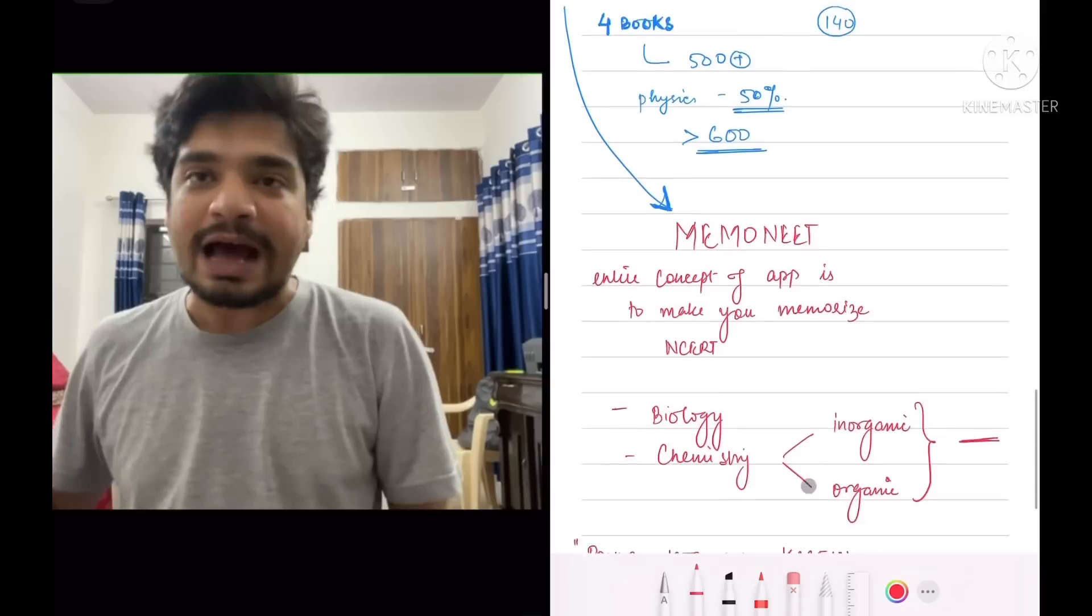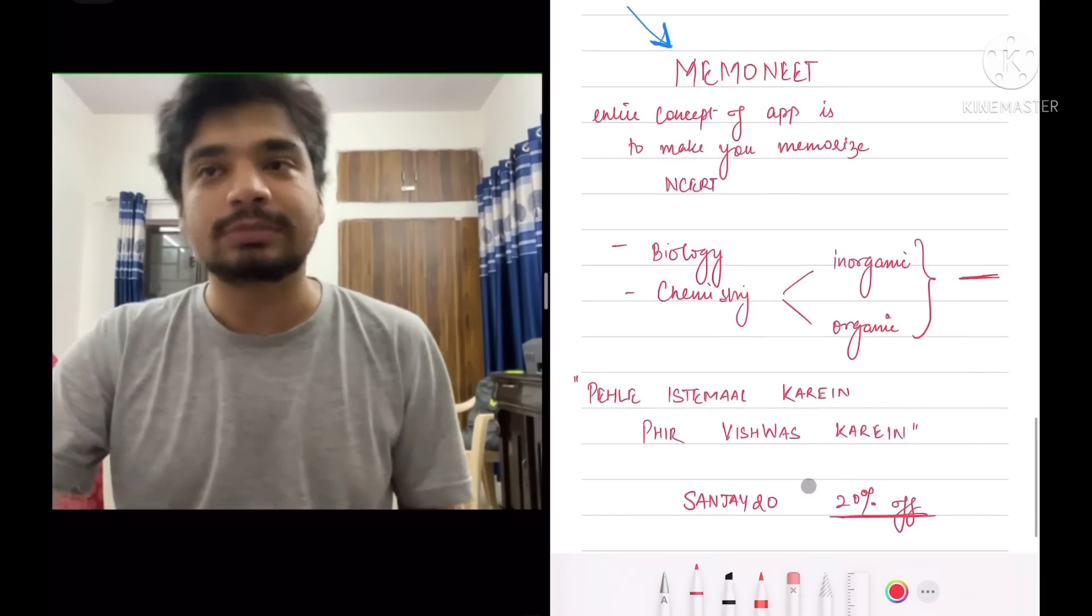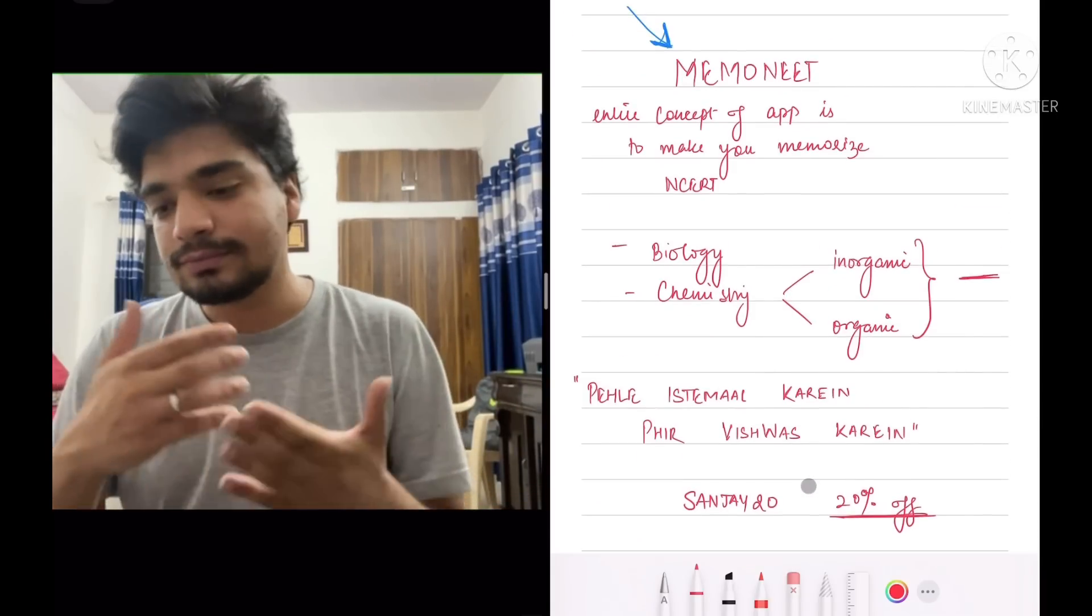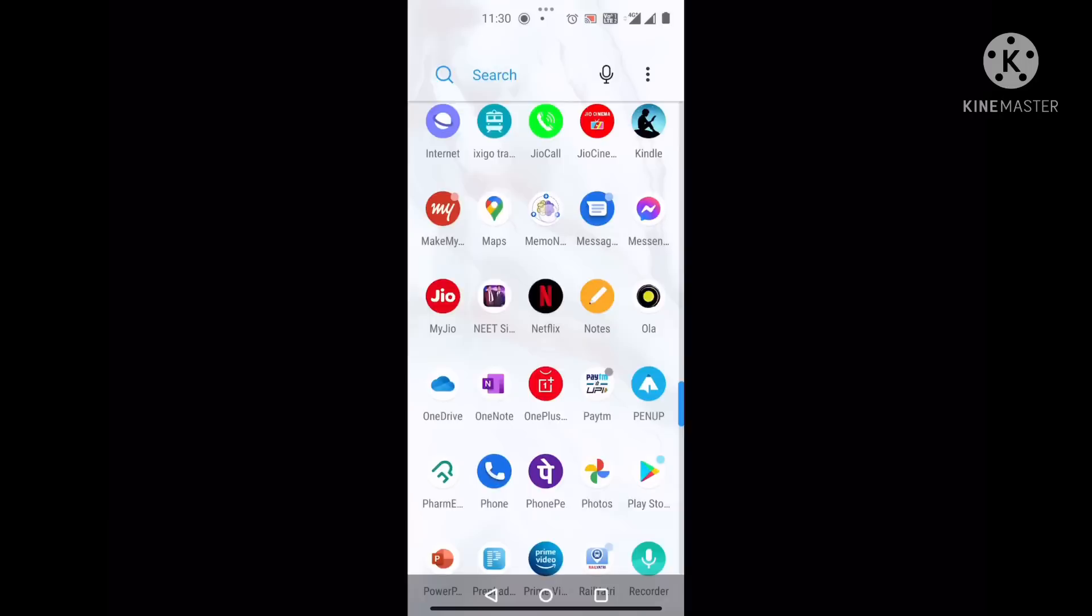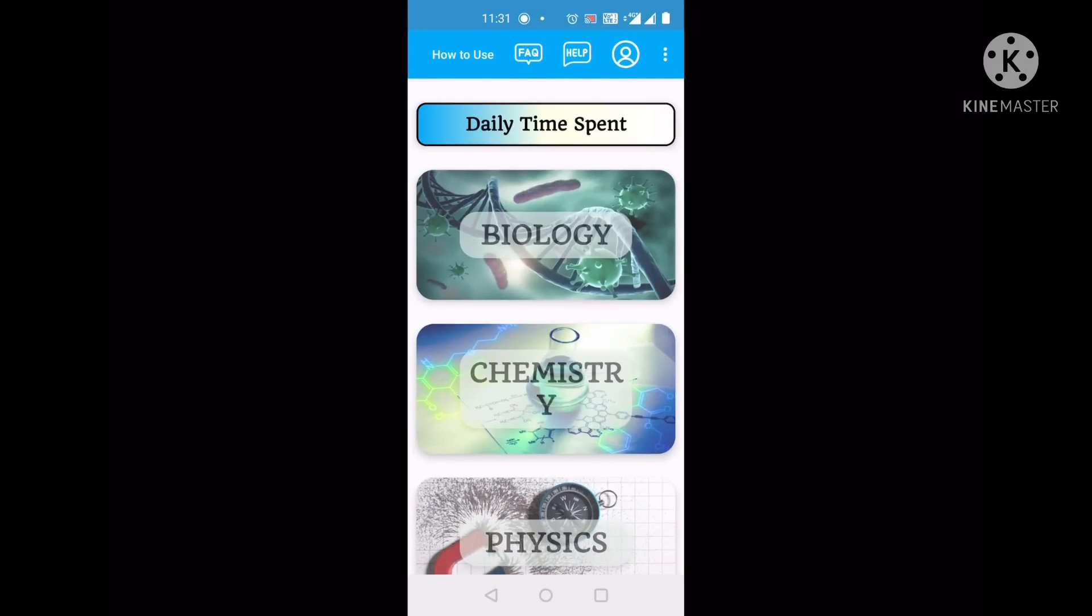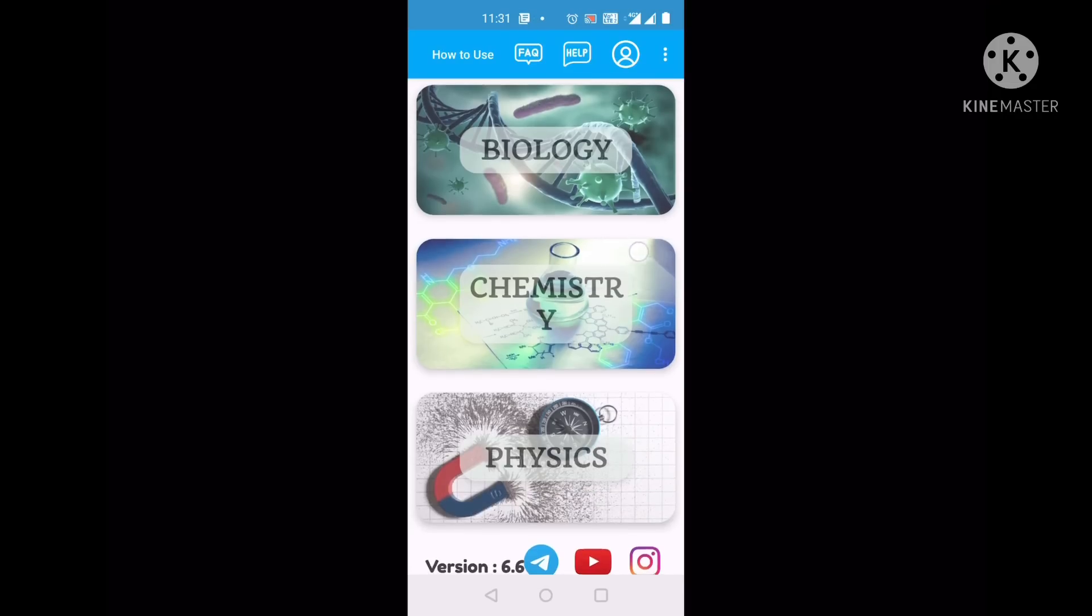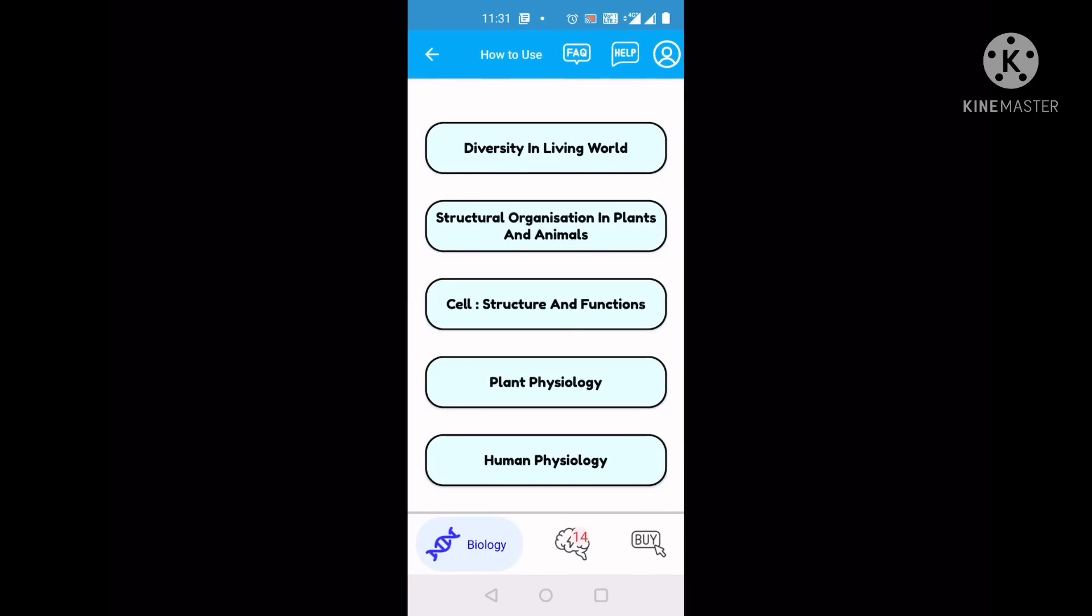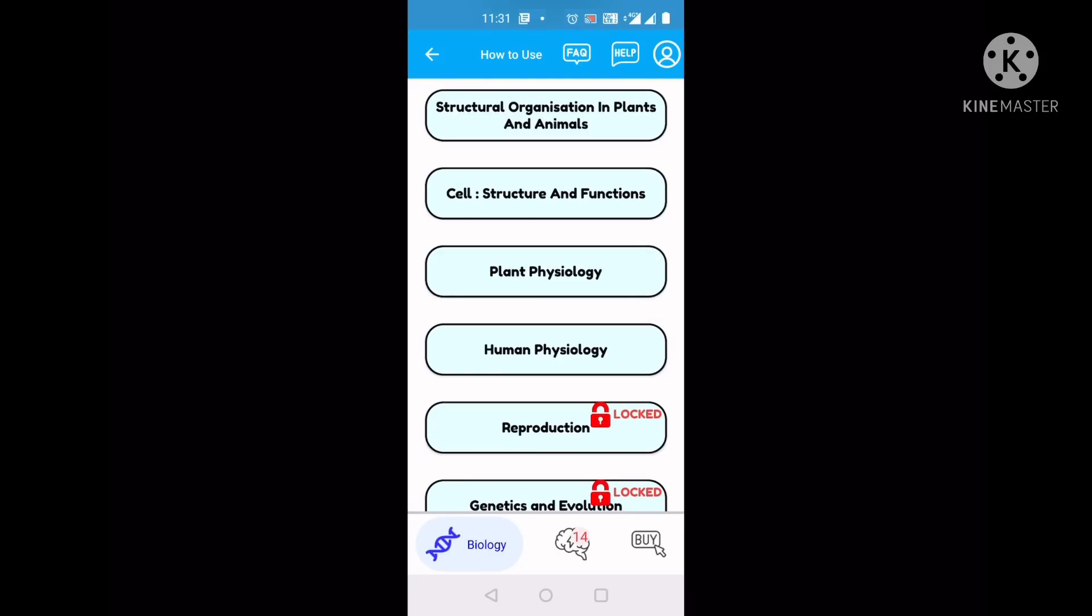Okay. Now I'll tell you about the Memoneet app, a really, really good concept. You can check it out. Thank you and have a nice day. So this is the Memoneet app. Memoneet is a line by line NCERT app. Basically its one concept is to test your NCERT line by line with the help of MCQs. It's an amazing app as far as biology is concerned with each and every chapter given topic wise and chapter wise.